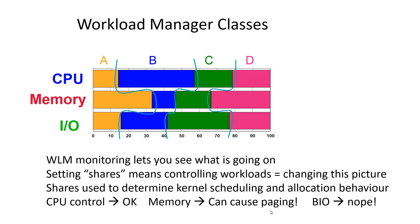I've used CPU control on occasions for a rogue application that shouldn't have much CPU time — during the busy period of the week, keeping it down and letting the database have everything it needs. You're generally trying to limit things going wrong rather than force more CPU onto something that has nothing to do. For memory, be careful with hard limits — you might force a class to start paging even if there are 10 gigabytes free in the LPAR, and we know paging is disastrous for performance. I've never seen anyone actually control block IO, because you can't do disk IO faster than the hardware allows — all you can do is postpone scheduling, which you generally don't want.